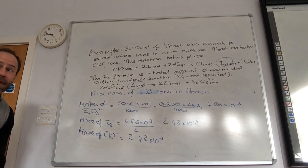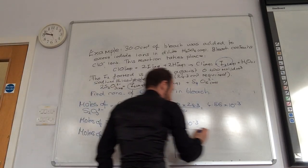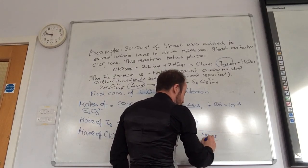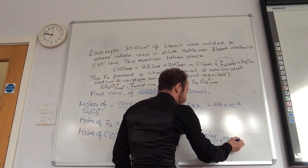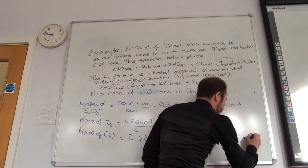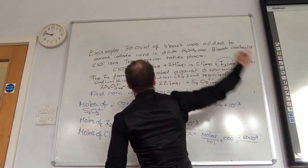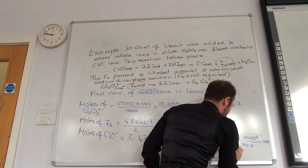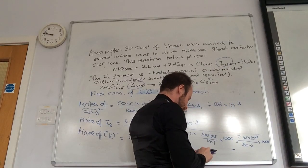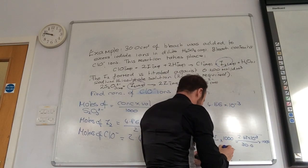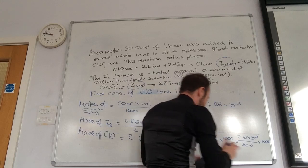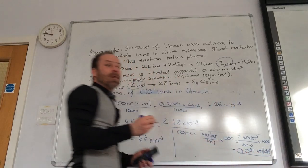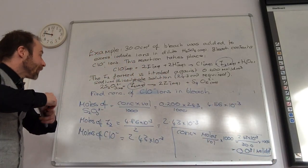Right, final step is concentration. So concentration is moles times 1,000 over volume. Moles we've worked out as being 2.43 times 10 to the minus 3. The volume was 30 times it by 1,000. And that gives me 0.081 moles per decimeter cubed.